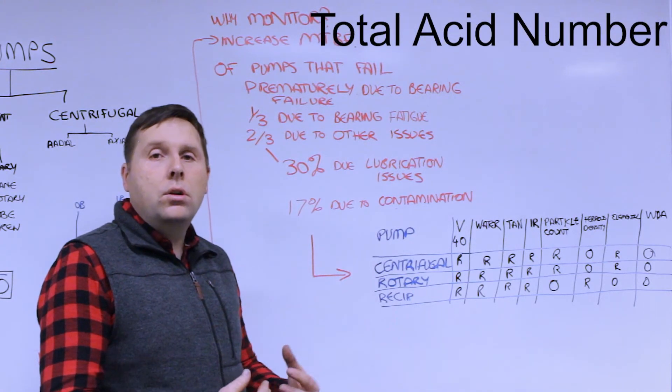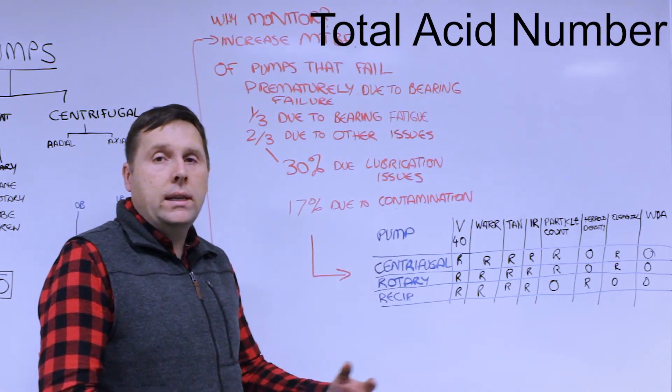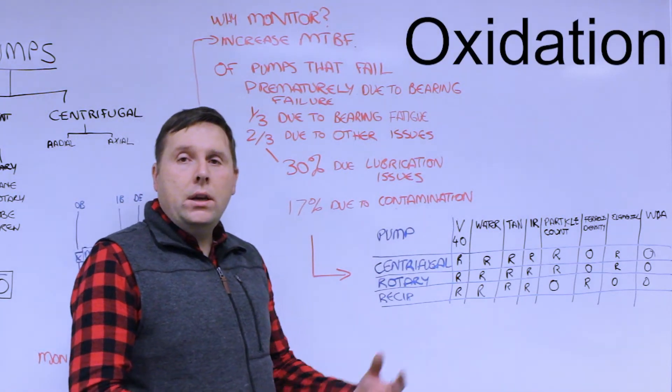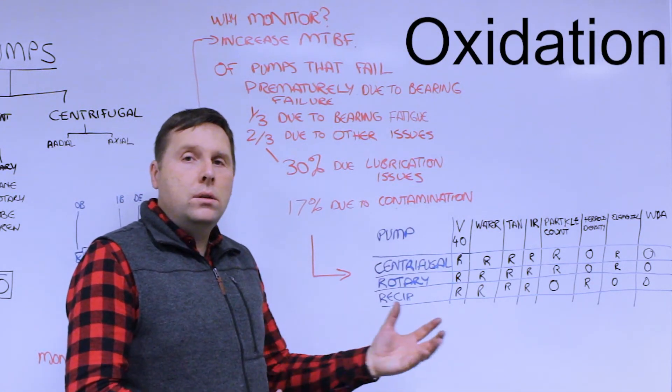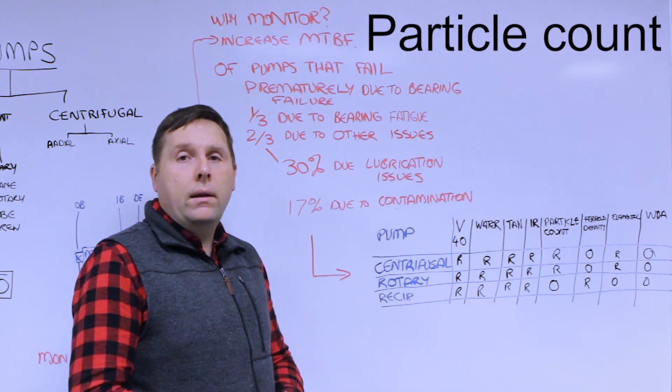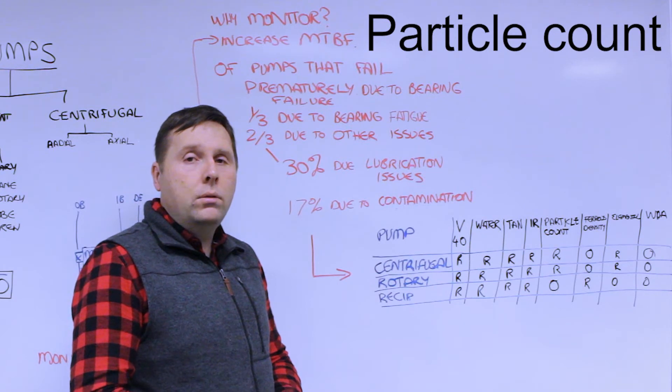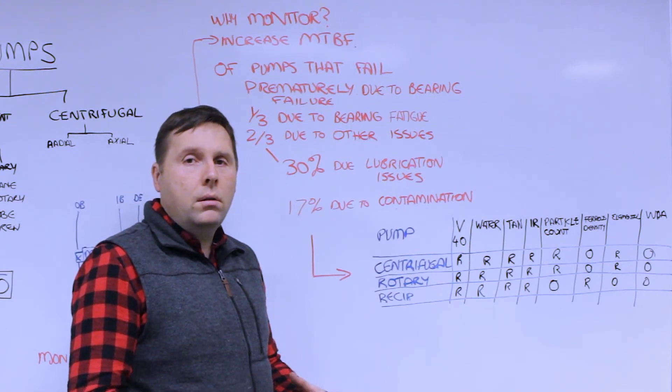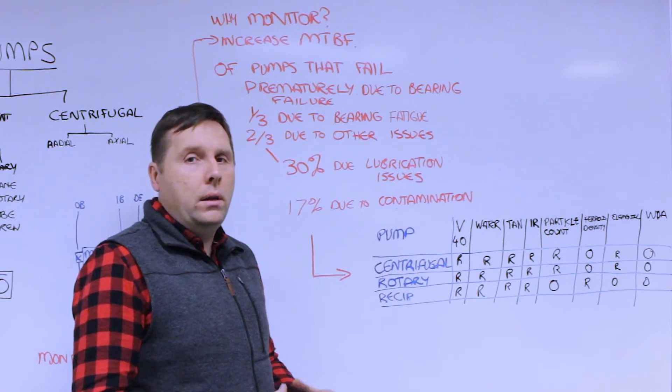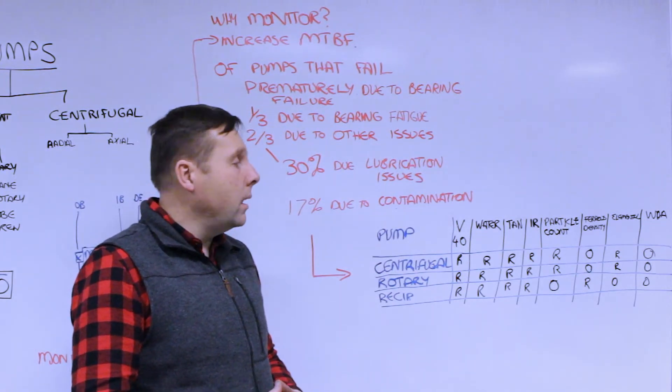Acid number to determine if the fluid is degraded or there's a lack of lubrication causing overheating. Infrared oxidation, a supporting guideline to determine if the oil is no longer fit for use. Particle count, a measure of the level of cleanliness of the fluid - particularly for bearings, it's critical. For other applications, you want to see if there's aggressive wear on the rotary or vane style systems.